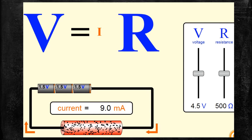The resistance of the conductor is considered as 500 Ohm. It should be kept constant and should not be varied.